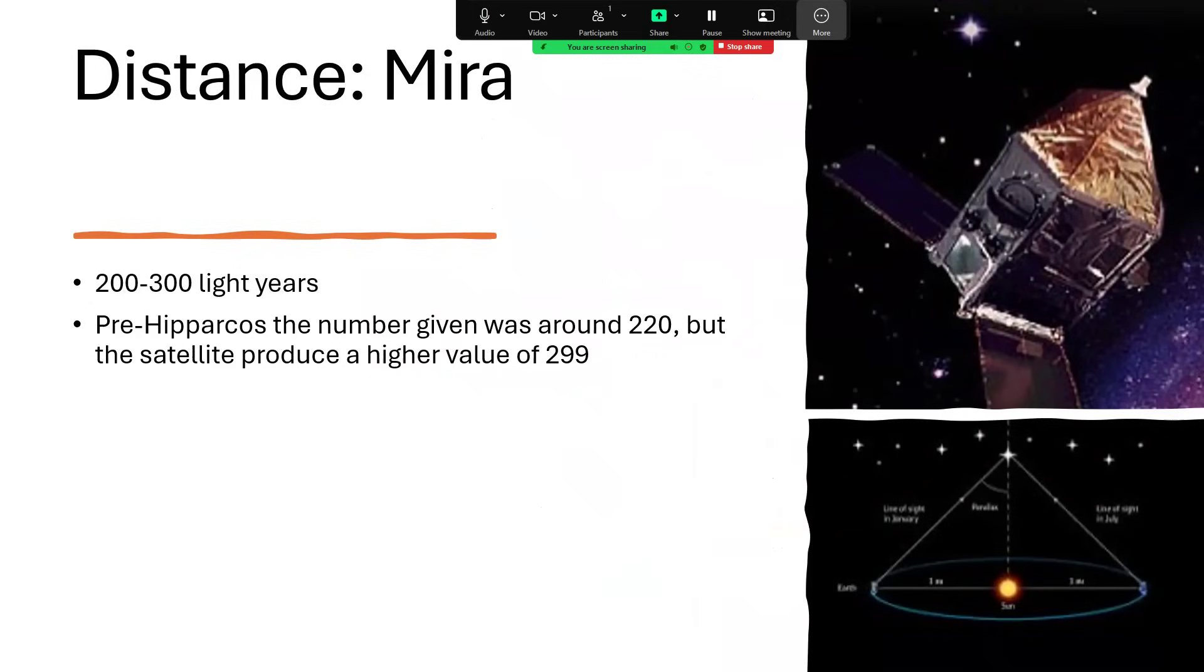Distance-wise, it's probably around 300 light years. Some estimates pre-Hipparcos give much lower figures, but we seem to be settling on around 299 as the correct answer these days in terms of distance from the sun.